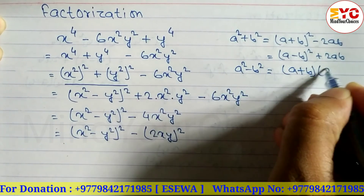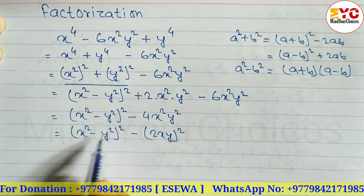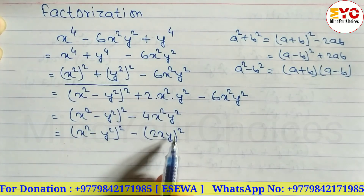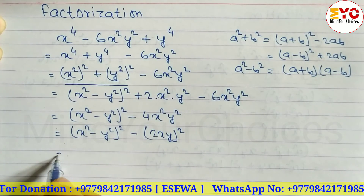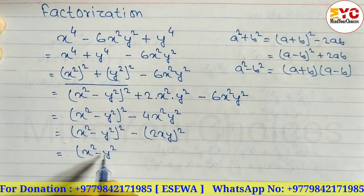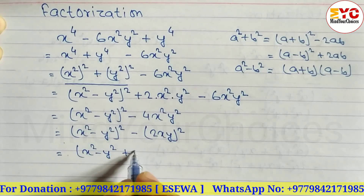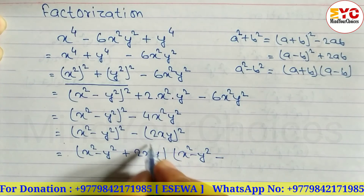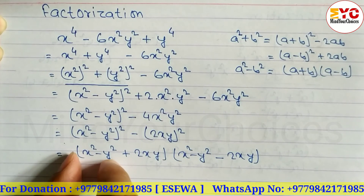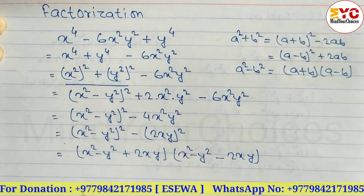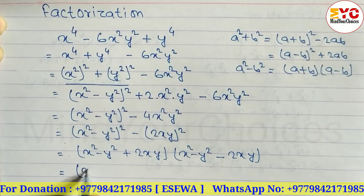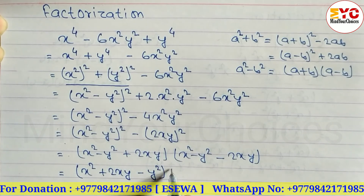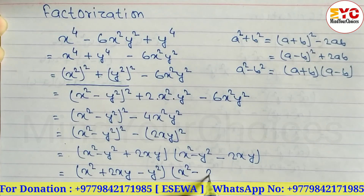The formula for a squared minus b squared is a plus b times a minus b. Here a is x squared minus y squared, and b is 2xy. So we write: x squared minus y squared plus 2xy, times x squared minus y squared minus 2xy. Arranging this gives: x squared plus 2xy minus y squared times x squared minus 2xy minus y squared. That is your answer.